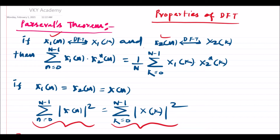Now if x1(n) and x2(n) are both equal to x(n), then the above expression reduces to summation n=0 to N-1 of |x(n)|² equals 1/N summation k=0 to N-1 of |X(k)|². This is the energy formula which we discussed already in the signals and systems class. In this video lecture we will prove both these statements — the first statement and the second statement.